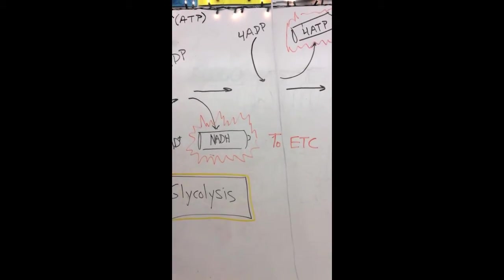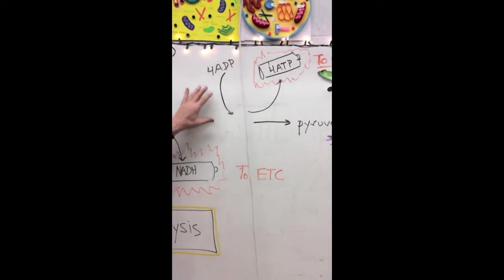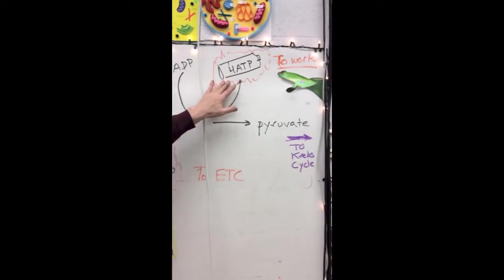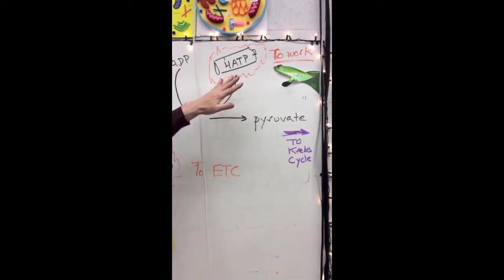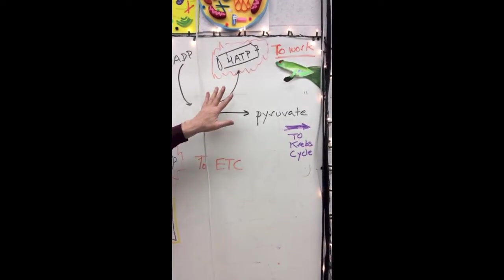Remember, we're in the cytoplasm right now. The intermediate form here interacts with four ADPs and forms four ATPs, and these can go to do various items of work in the cell. Pumps, cables, growth, cell division and the like.